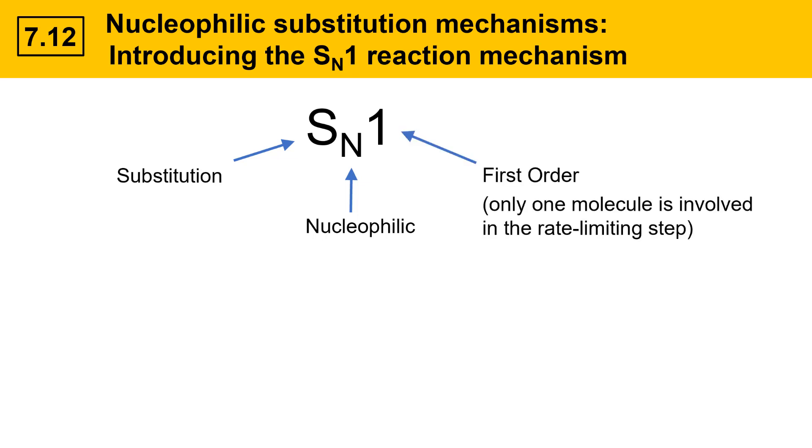means first order, or unimolecular. That means that only one molecule is involved in the rate-limiting step. It doesn't mean the number of total steps, because the SN1 mechanism actually requires two steps.